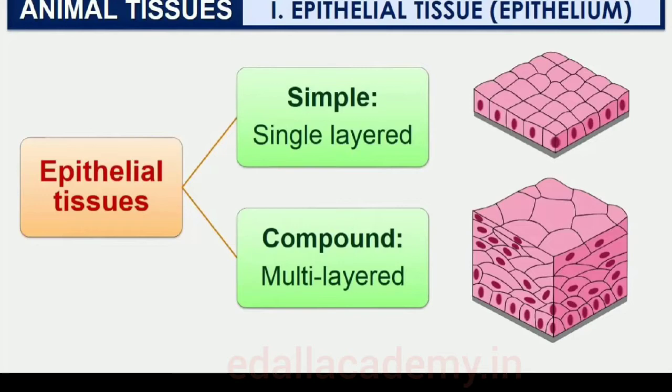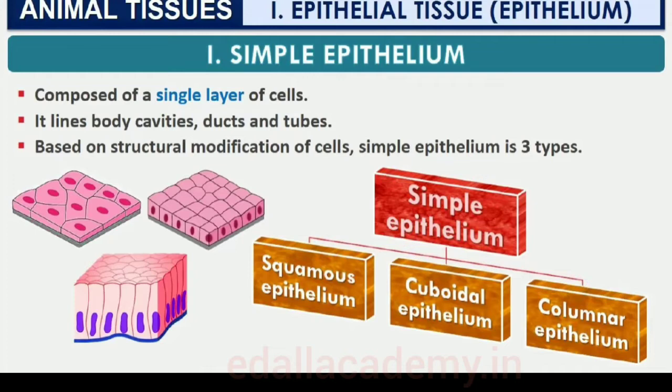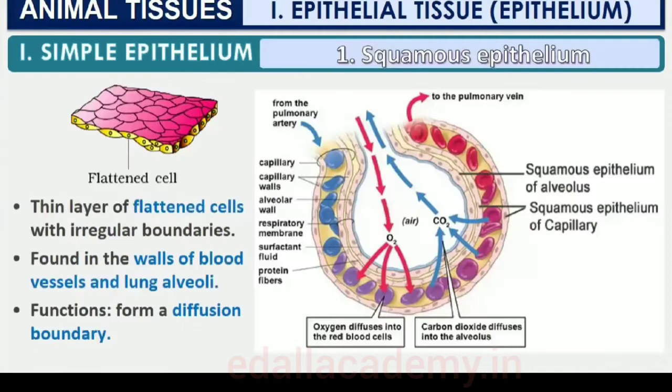These are: Squamous, Cuboidal, and Columnar. The squamous epithelium is made of a single thin layer of flattened cells with irregular boundaries. They are found in the walls of blood vessels and air sacs of lungs and are involved in functions like forming a diffusion boundary.